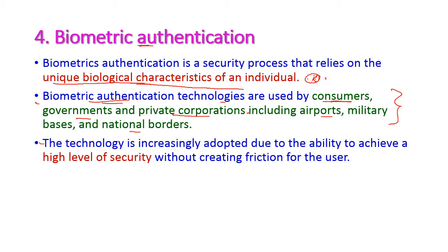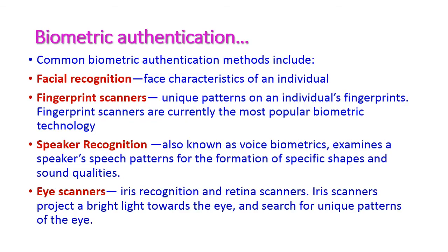Biometric authentication provides a high level of security without affecting the user, because only the particular user has their own biological identity. The common biometric authentication methods include facial recognition, fingerprint scanners, speaker recognition, and eye scanners. Facial recognition uses the face characteristics of an individual — each individual has their own unique facial characteristics. Fingerprint scanners use the unique pattern of an individual's fingerprint, and are very popular nowadays.